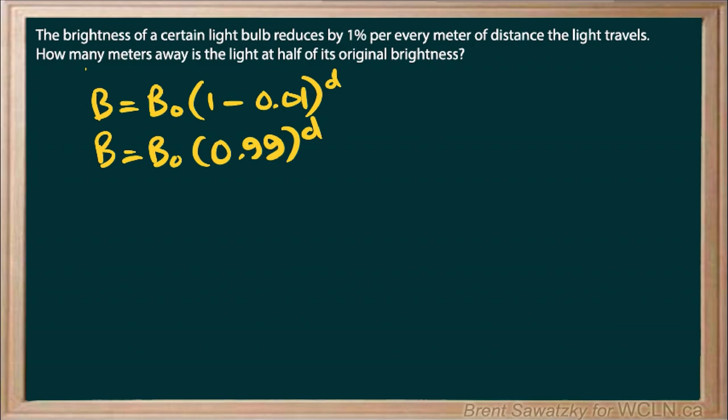Let's divide both sides by B₀, just to clean that out of there, and we get our ratio of brightness to original brightness. We know that this should be 0.5, or 50% as a decimal.